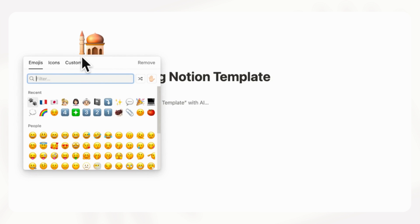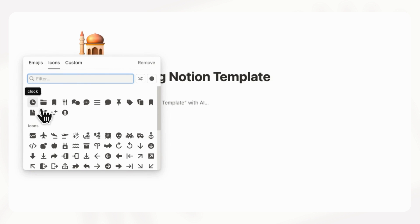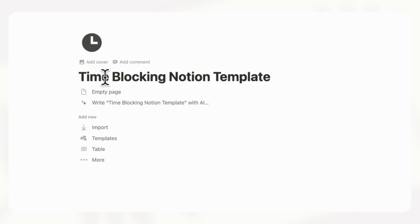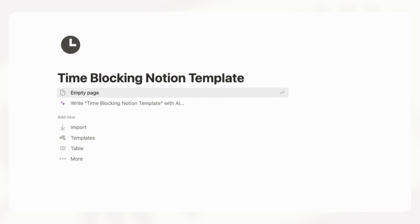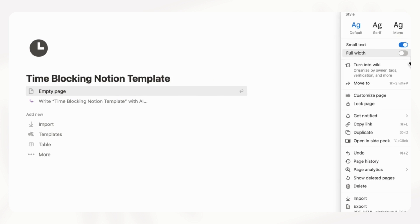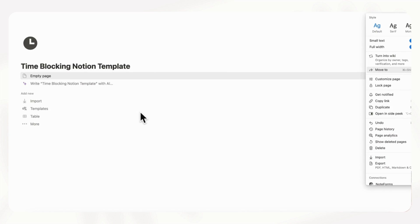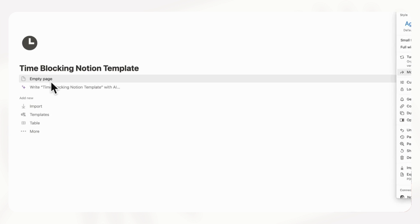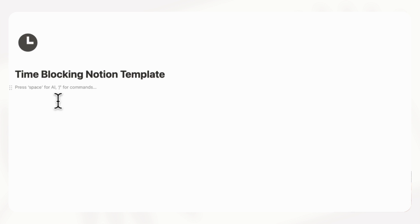Press add icon and then we're going to go to a clock. If you'd like, you can add a cover by clicking add cover. We're going to go to the top right hand corner, three dots, and do small text and full width so we get more space on the page. Now if we click empty page we can get started. We're going to make one database for time blocking and then we'll be showing you different views on how you can look at this.